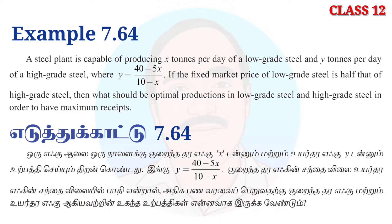A steel plant is capable of producing x tons per day of low grade steel and y tons per day of high grade steel, where y is equal to (40 minus 5x) divided by (10 minus x). If the fixed market price of low grade steel is half that of high grade steel, what should be the optimal production of low grade and high grade steel in order to have maximum receipts?